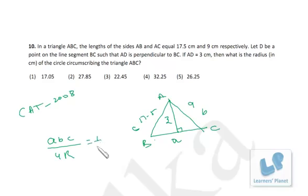So base is A and altitude is AD, that is 3. So A and A is cancelled, this is 2. So we have to find out the value of R, that is BC by 6.